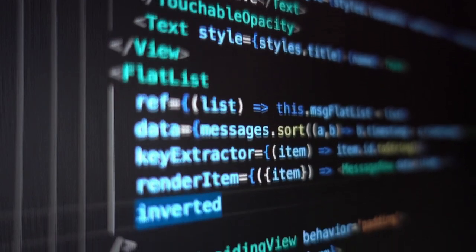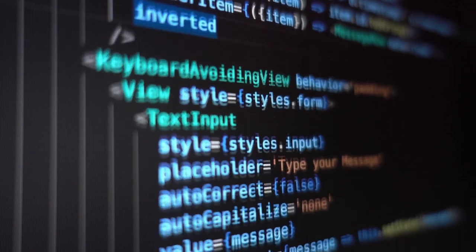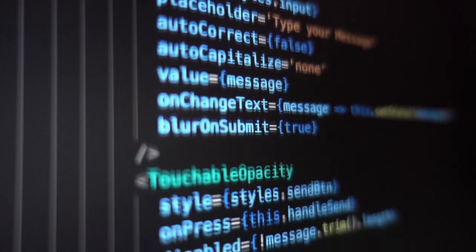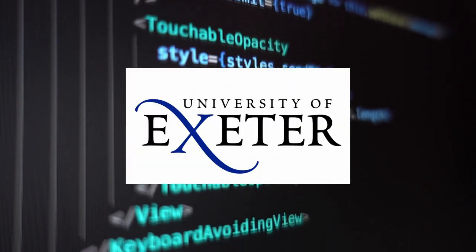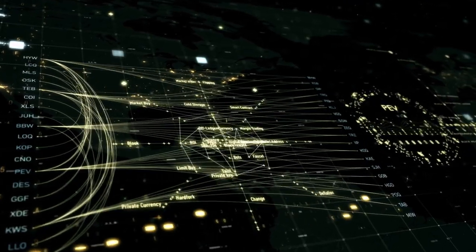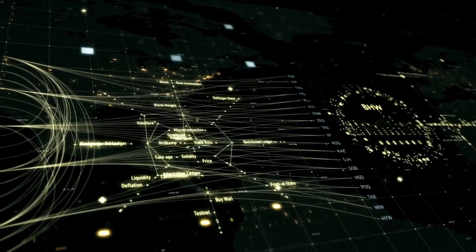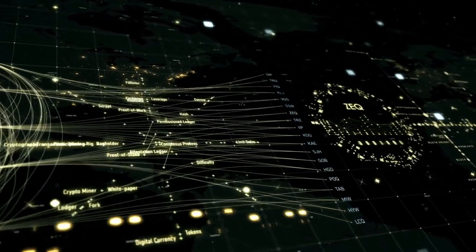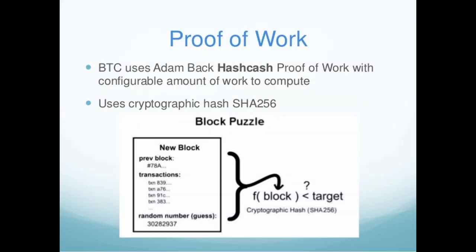Adam Back seems to be the perfect match for Satoshi Nakamoto. Back is a British cryptographer and the CEO of Blockstream, which he co-founded in 2014. When he was young, he taught himself coding, and years later he got a computer science PhD in distributed systems at the University of Exeter. Back was an early pioneer in the digital currency search, and in 1997 he invented Hashcash, a proof-of-work system which is used in the Bitcoin mining process.